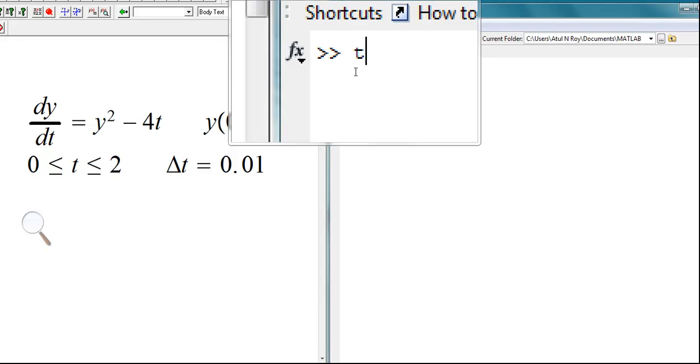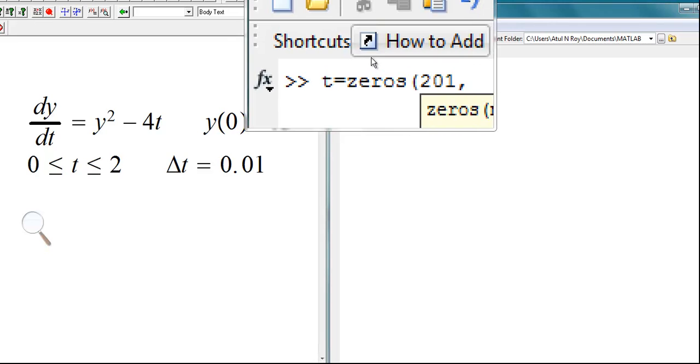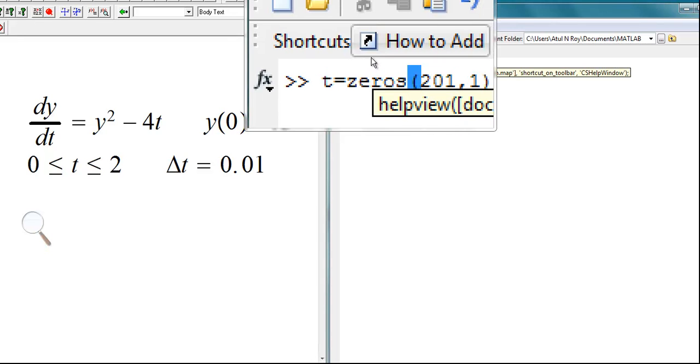So let us give it the values of t. So our t's are what? 0's from 0's, 201 to 1.